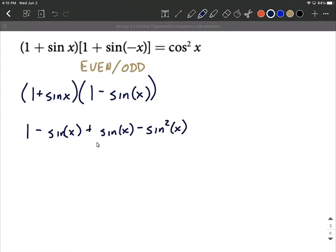Now the middle two terms, we have subtracting a sine of x and adding a sine of x. Basic algebra says you're combining like terms. Those combine together and make zero sines of x.